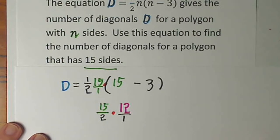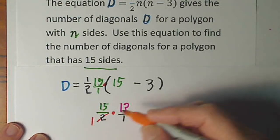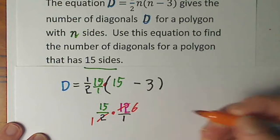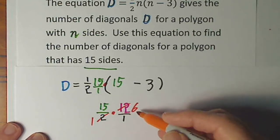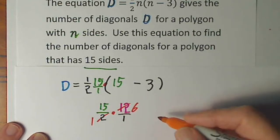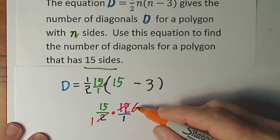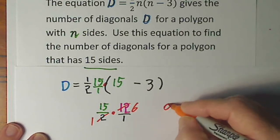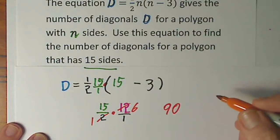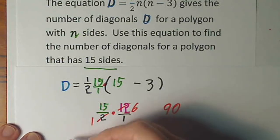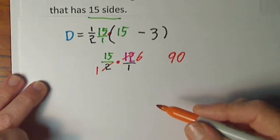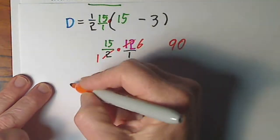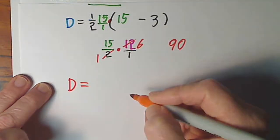So 2 goes into 2 once, 2 goes into 12 six times. 15 times 6 is 60, 70, 80, 90. So we have, yes, I'll slide down some more, D equals 90.